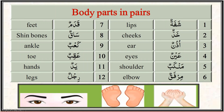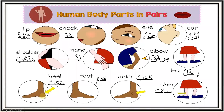Every body part which is in a pair is considered fake feminine. Examples are: shafatun, khaddun, uzunun, aynun, mankabun, mirfaqun, qadamun, sa'fun, ka'bun, 'aqibun, yadun, rijlun. To help you memorize these easily, a document with an illustrative guide to identify and memorize body parts in pairs will be shared.